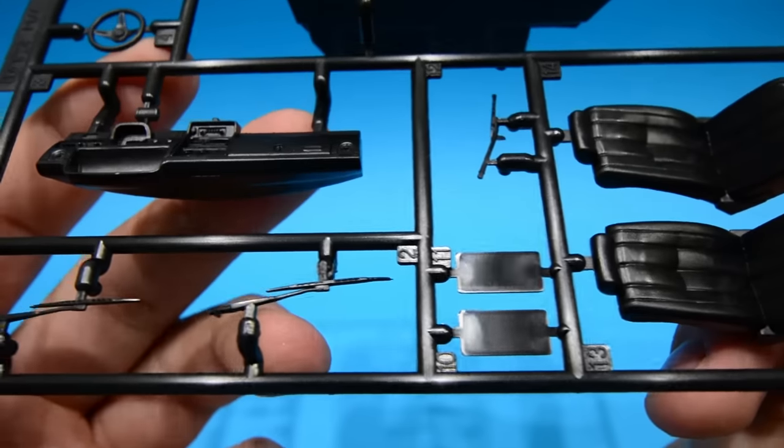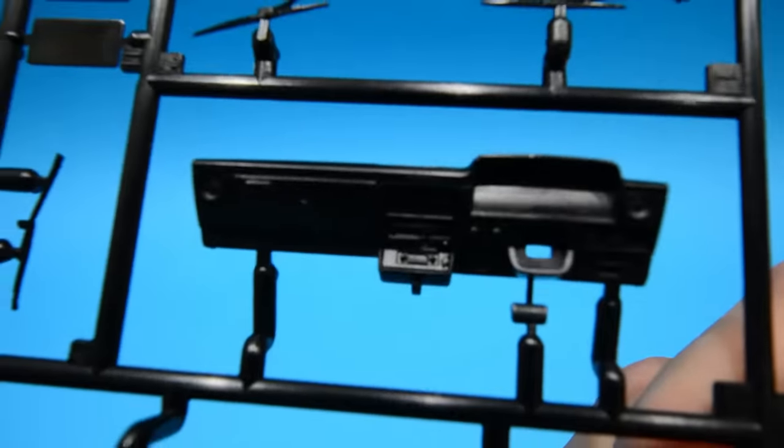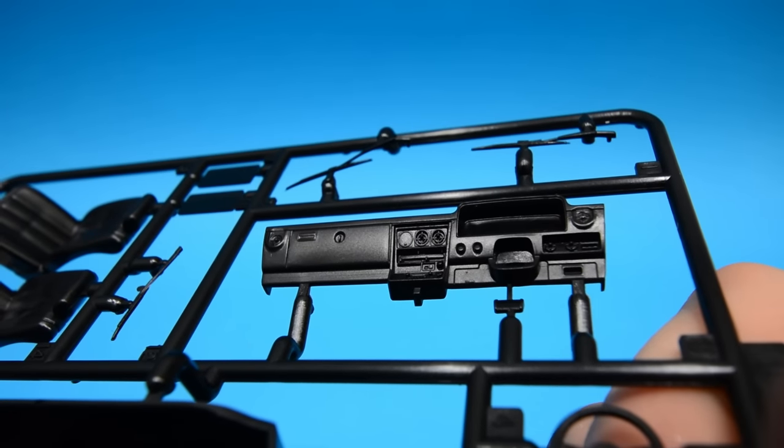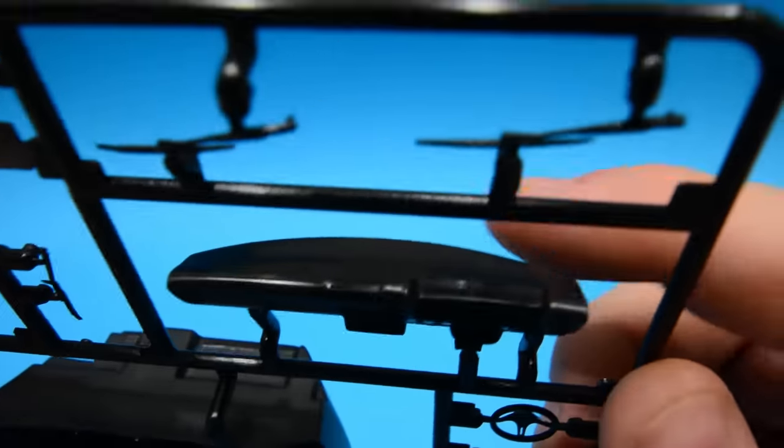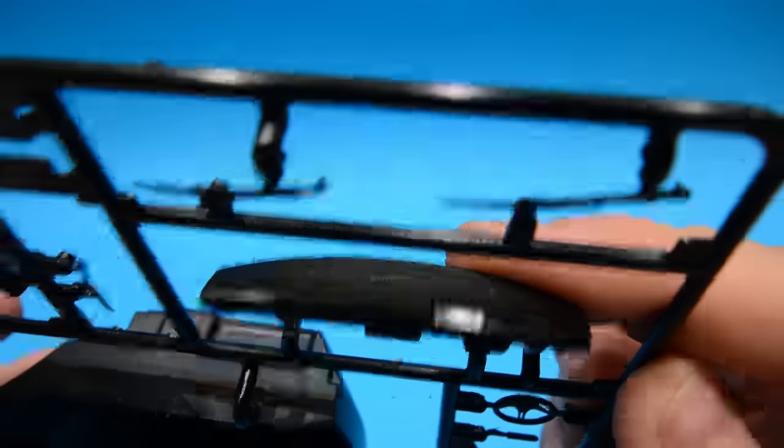Right. Rear mirror. Number plates. Front wipers. We'll flip this over again for the dashboard. Which look at the moulding on that. It's fantastic. Great detail on that. Really good.